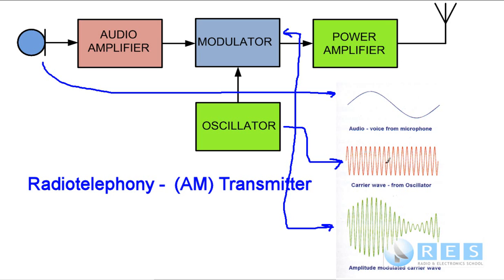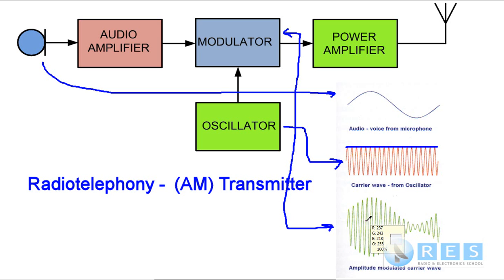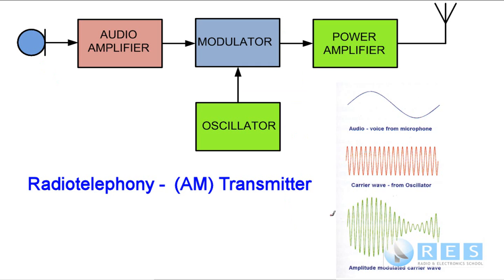This is the unmodulated carrier. This is the audio from the microphone. When we put the two together, you can see the amplitude here is level — there's no change in amplitude there. But here, there's now a change in amplitude, and that change is in sympathy with our voice. And we've worked out a way of transmitting radio telephony on radio. That method is called amplitude modulation, because the amplitude of the modulated signal is being varied when we speak with our voice.